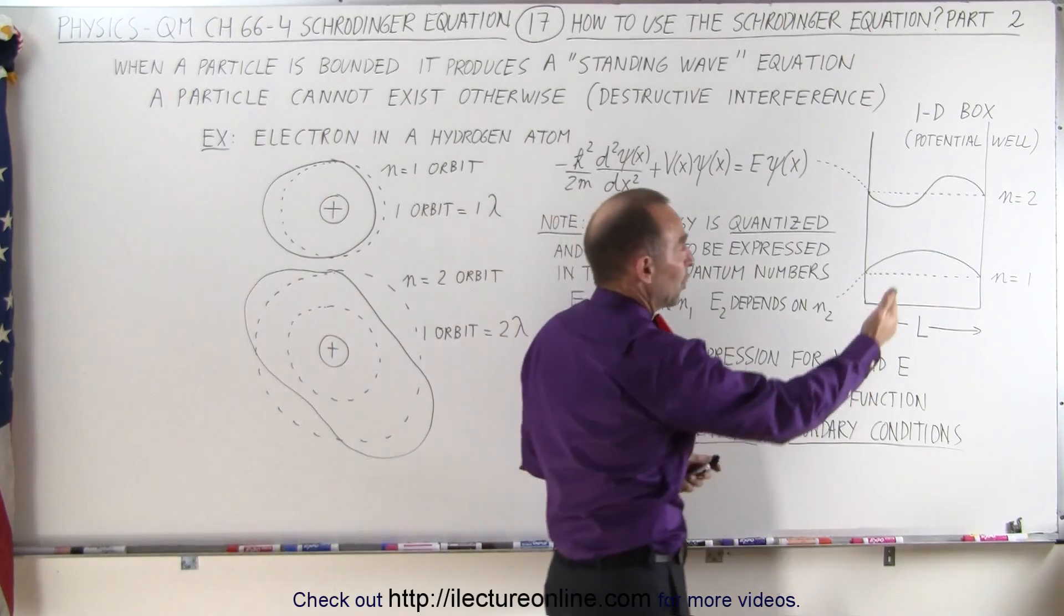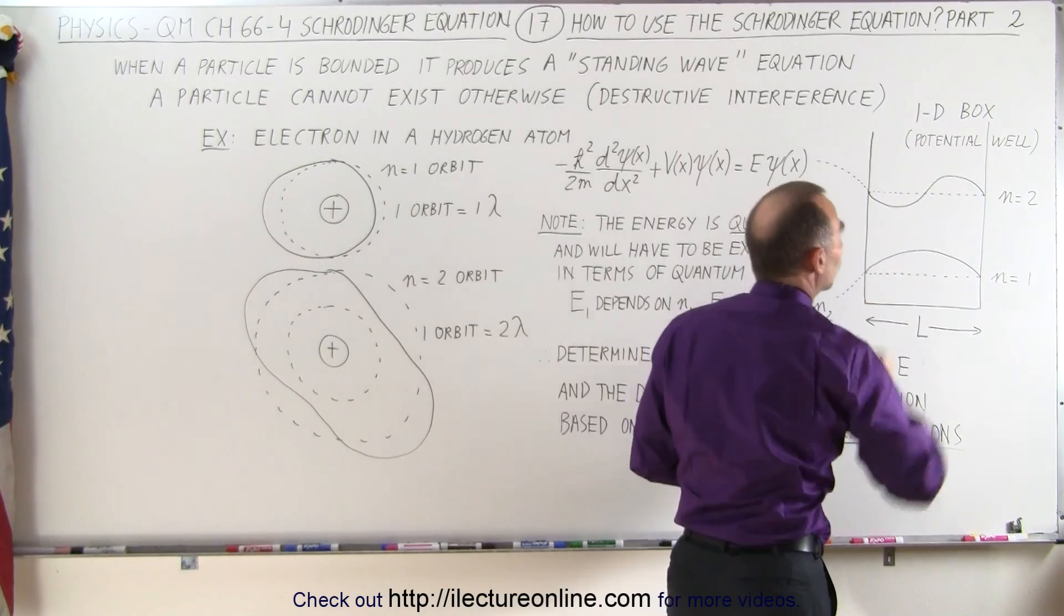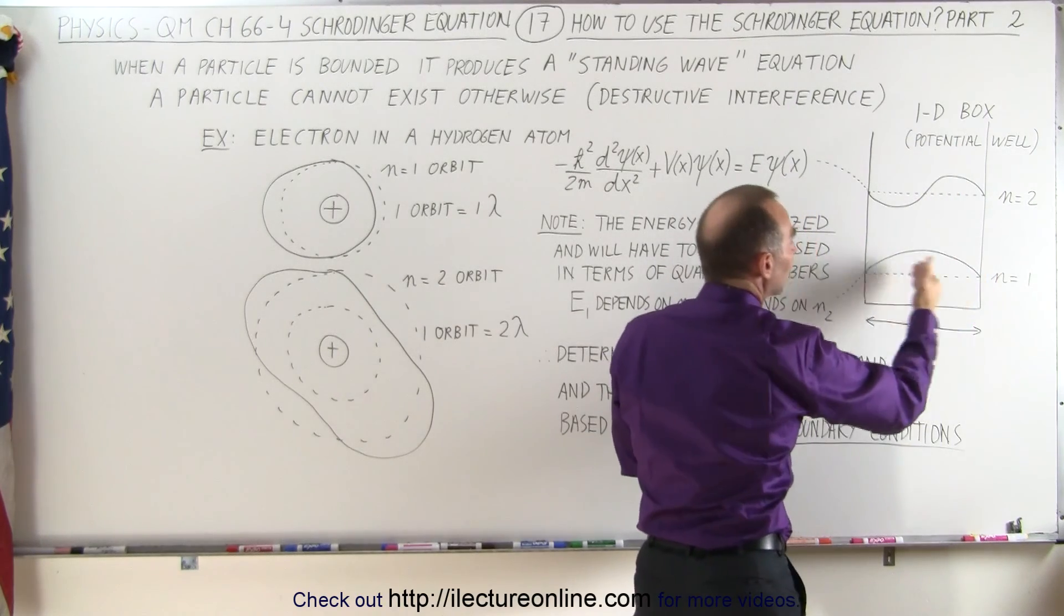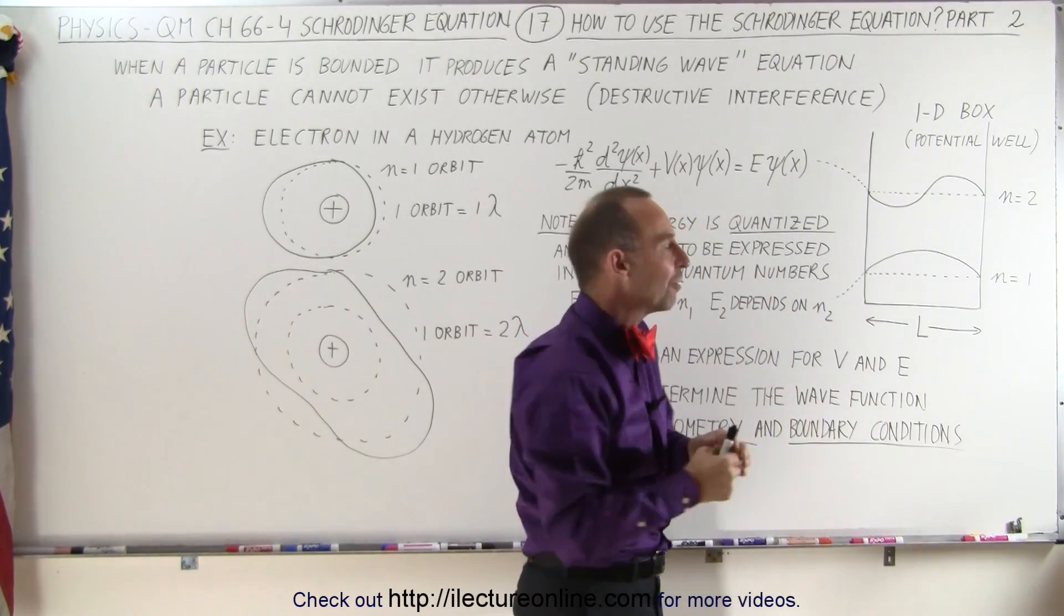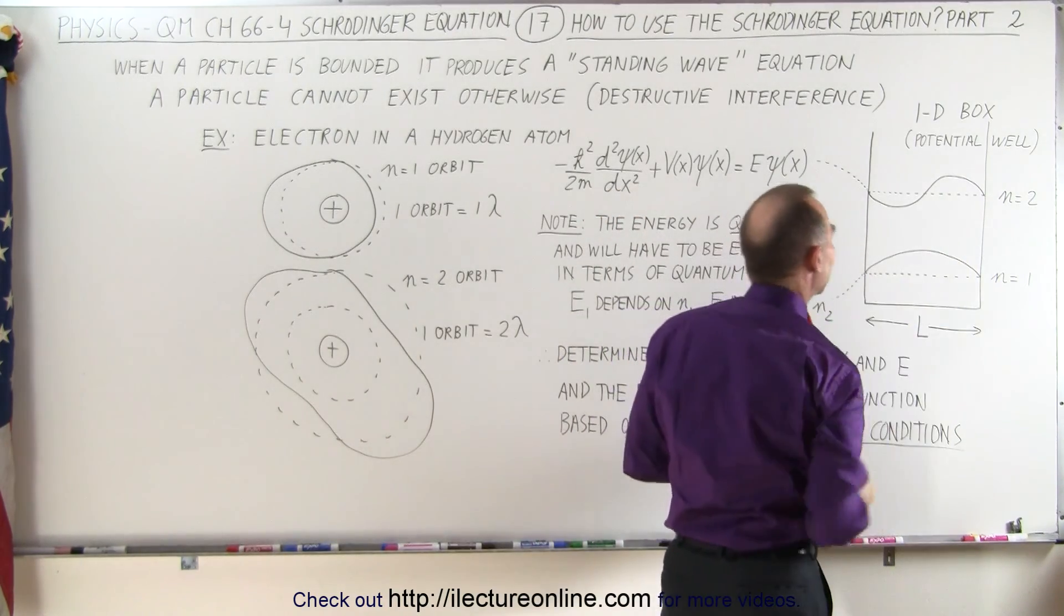If a particle exists in what we call a potential well or a one-dimensional box, where the particle can exist and how the particle can move back and forward will give it a probability function that looks like a standing wave.